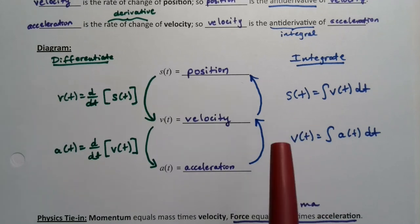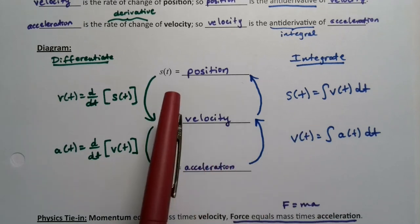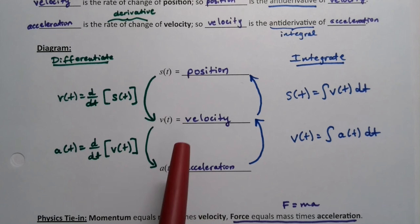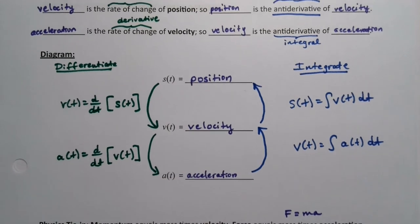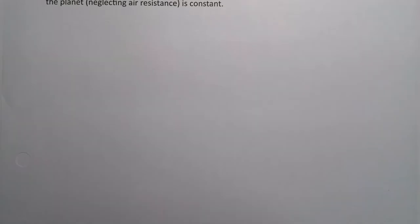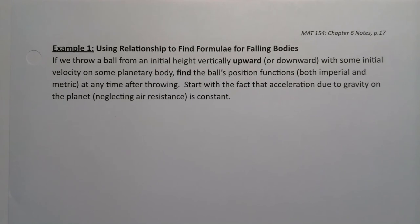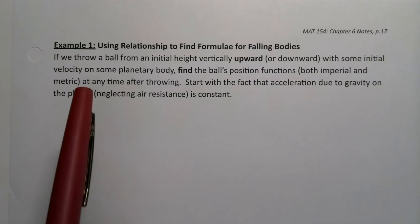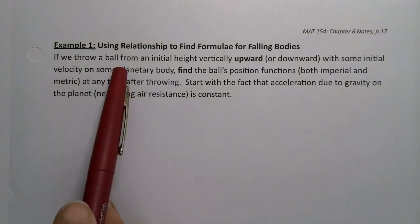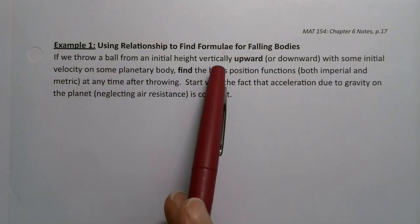We want to put our renewed knowledge about the relationships between position, velocity, and acceleration to good use — namely to remind ourselves about the general formula for falling bodies. So falling bodies, or thrown bodies: in particular, we throw a lot of balls off of cliffs and things like that. We have a ball, we're going to throw it from an initial height.